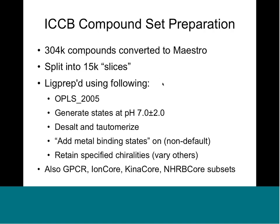Our set obtained from ICCB is about 304,000 compounds. We converted those to Maestro format to make later steps easier. They're split into 15,000-compound slices. This makes things easier to run in chunks — if one chunk happens to die, you don't have to rerun all 300,000 compounds. They were prepared using LigPrep with the standard recommended procedure from Schrodinger using the OPLS 2005 force field. We generated states at pH 7 plus or minus 2, desalted, tautomerized, and added metal binding states.